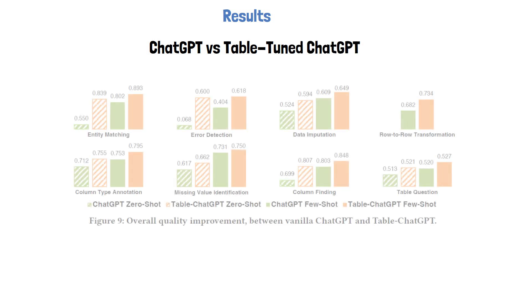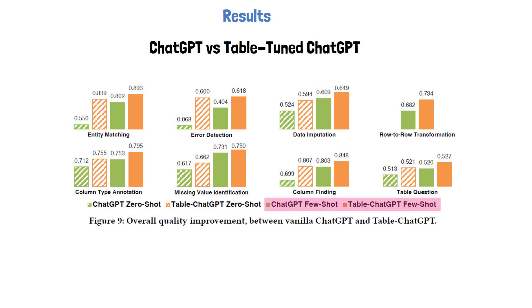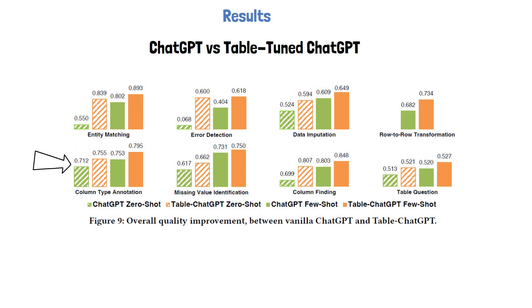Let's look at some results from the paper. Starting with the comparison of ChatGPT versus the table-tuned version, a figure shows results for 8 task types, each with 4 bars. The left 2 bars are zero-shot results (instruction and table only as prompt), and the right 2 bars are few-shot results (with additional examples added to the prompt). Green bars are ChatGPT and orange bars are the table-tuned version. There is clear improvement for most tasks — notably for error detection, where the table-tuned version's zero-shot performance improves dramatically. Interestingly, 4 charts at the bottom show tasks the table-tuned model was not trained on, yet it still improves over ChatGPT.